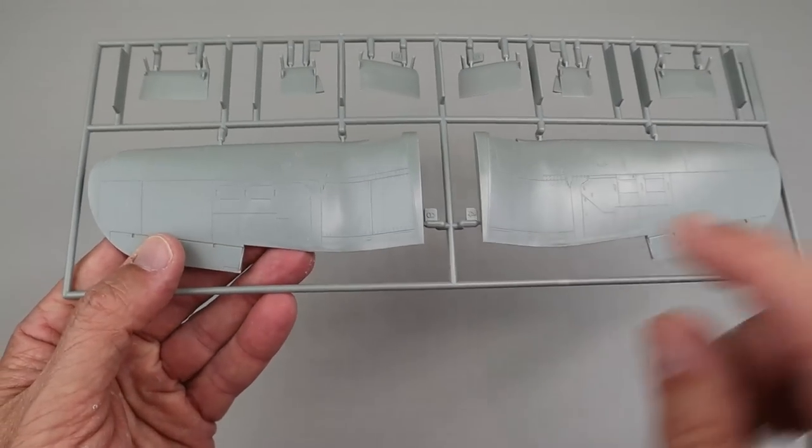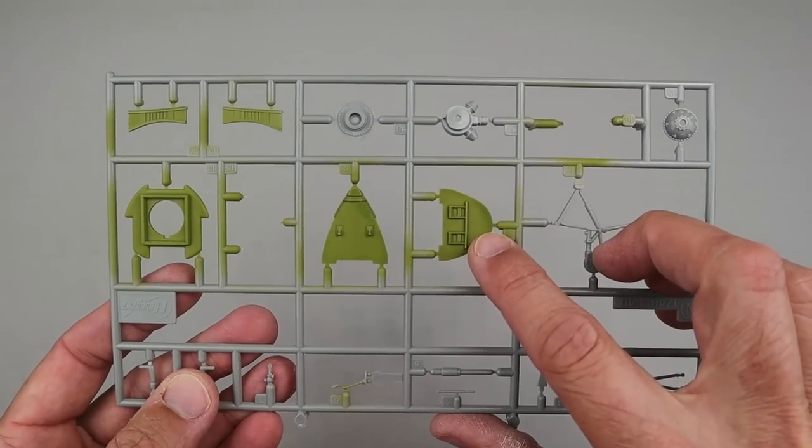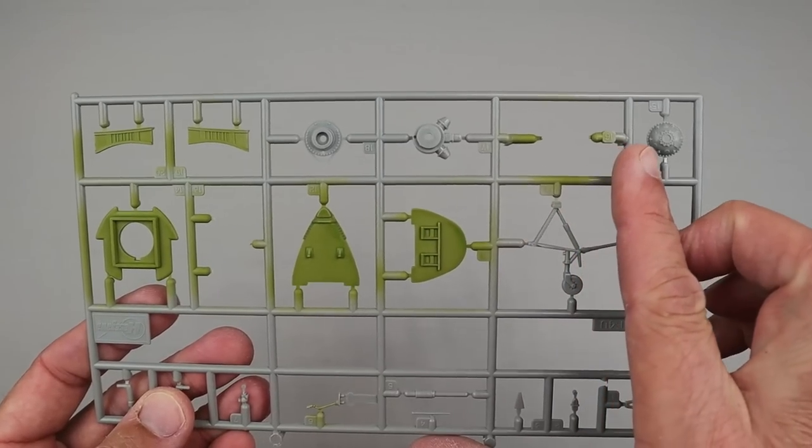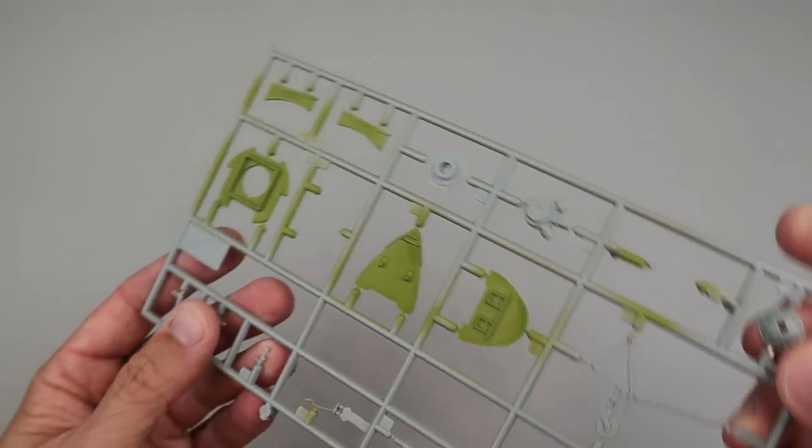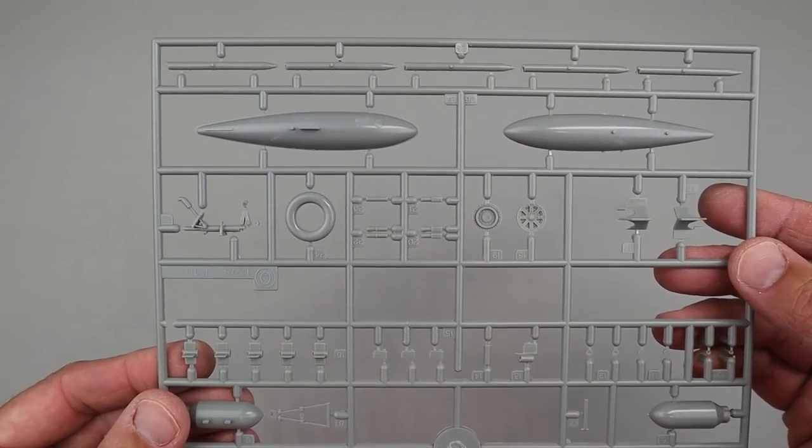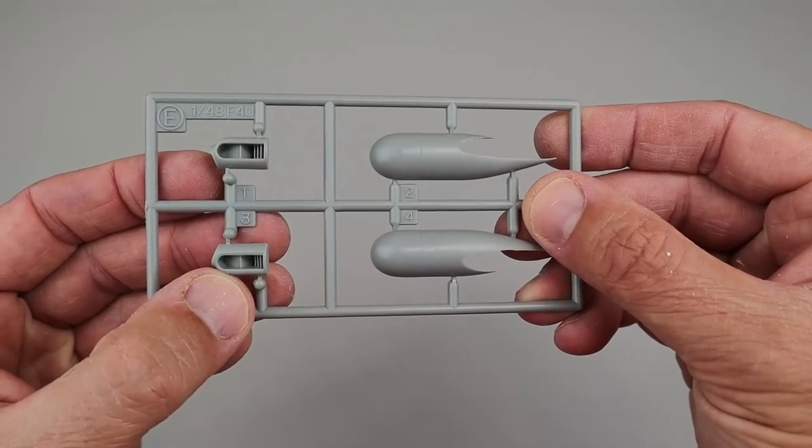The wings have equally nice surface details, and include options for drop flaps, which I really like to see on Corsair models. The cockpit parts and engine are decent, as I mentioned, but I'll be replacing the cockpit with that one from Wolfpack Resin. There are a couple of sprues that contain the parts for the ordnance, landing gear, wheels, radar, and other bits.